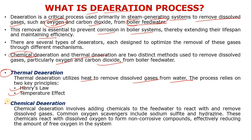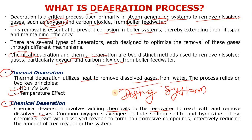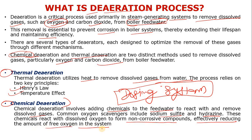Chemical de-aeration means adding chemicals to the feed water to react with and remove dissolved gases. If you are a process engineer preparing a boiler P&ID or steam generating P&ID, you will see a dosing system with reciprocating pumps — positive displacement pumps — used for chemical de-aeration. Common oxygen scavengers like sodium sulfite or hydrazine are injected directly into the steam drum, where they react with dissolved oxygen to form non-corrosive compounds.